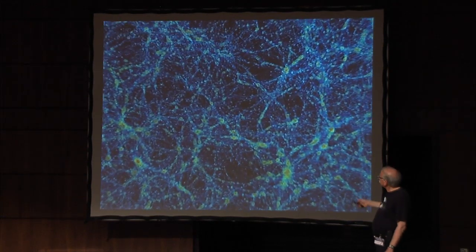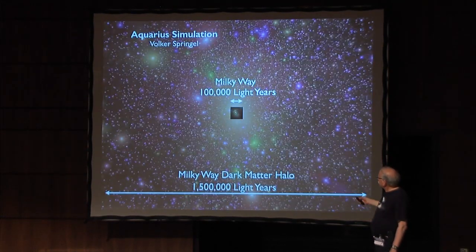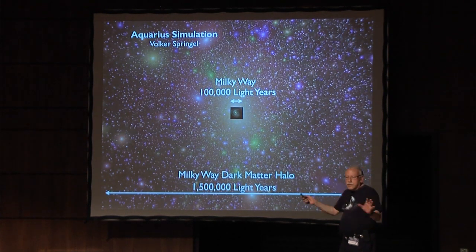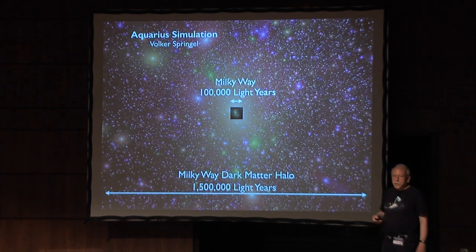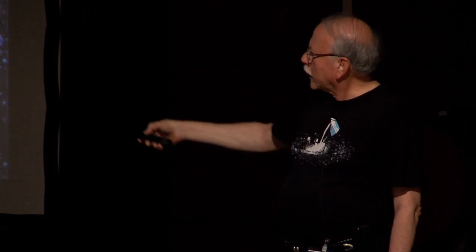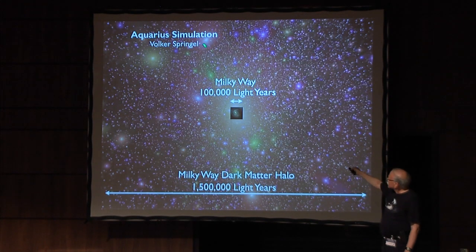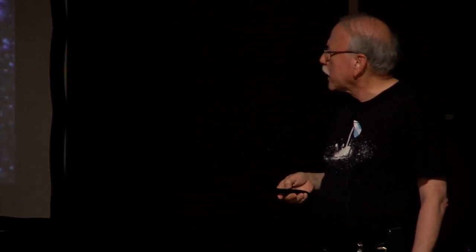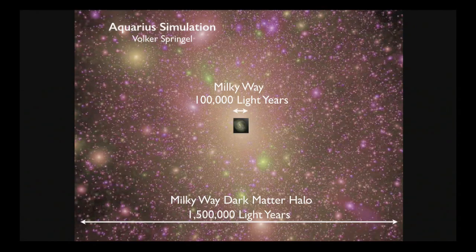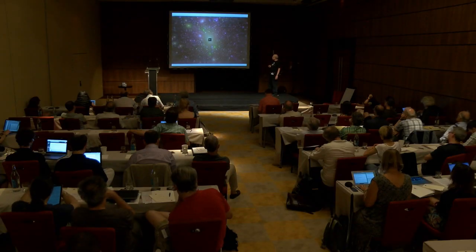Here's another visualization — we can now do these on the fly. That showed the filaments very clearly. This is the size of a galaxy like the Milky Way, about 100,000 light years across through the visible galaxy, and that's the dark matter halo. This is one of the beautiful simulations by Volker Springel and collaborators. Notice all the substructure — it's an interesting question whether that substructure really exists, as there's a lot more of it than we see in the form of any visible galaxies.